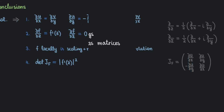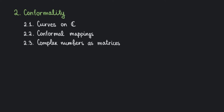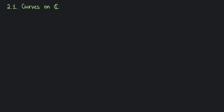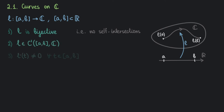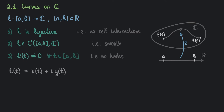In the next section we'll talk about conformal maps. Before that, let me say a few things about curves in ℂ. A parametric curve is just a continuous map from a real interval to the complex plane. We're interested in curves satisfying: the map L is bijective (no self-intersections), and L is differentiable with a non-vanishing derivative (the curve is smooth, without kinks). Writing L(t) = x(t) + i·y(t), the derivative of L is the expected expression, and the differential of L equals L′(t) dt.